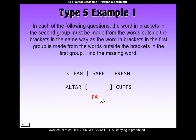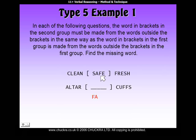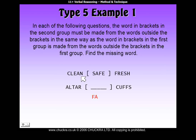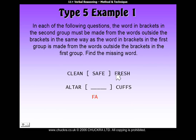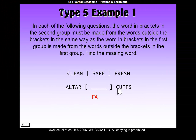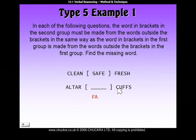To find the third letter of our answer, we go back up to 'safe' and look at its third letter, which is an F, and work out where it comes from. There's no F in 'clean', but there is an F in 'fresh', so it must be that one — it's the first letter from the word on the right. So we come down and look at the first letter from the word on the right, which is a C. So the third letter of our answer is C.